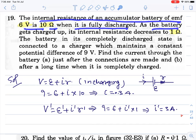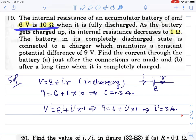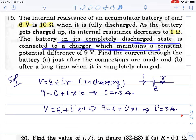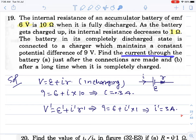The internal resistance of an accumulator battery of EMF 6V is 10 ohm when it is fully discharged. As the battery gets charged up, its internal resistance decreases to 1 ohm. The battery in its completely discharged state is connected to a charger which maintains a constant potential difference of 9V. The charger maintains voltage to charge the battery.